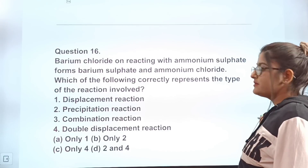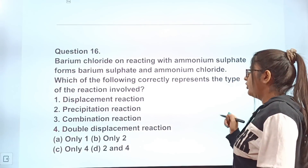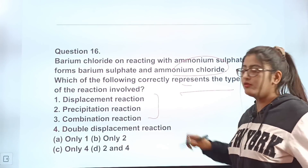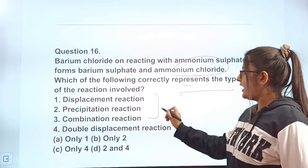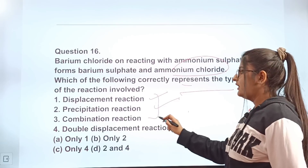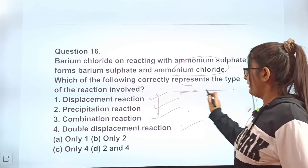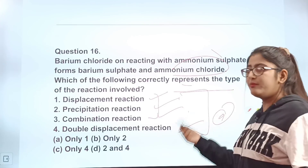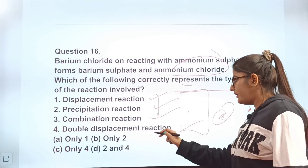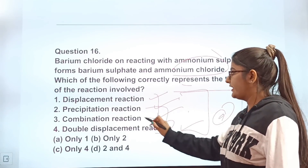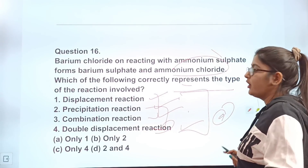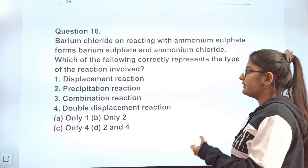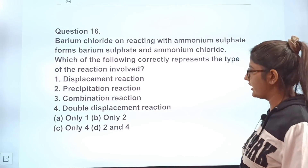Question 16: Barium chloride on reacting with ammonium sulfate forms barium sulfate and ammonium chloride. Which of the following correctly represents the type of reaction involved? Options include displacement reaction, precipitation reaction, combination reaction, and double displacement reaction. The correct answer is D — both precipitation reaction and double displacement reaction are involved in this process.